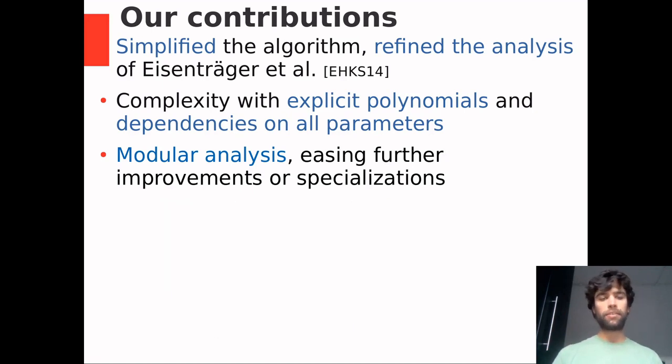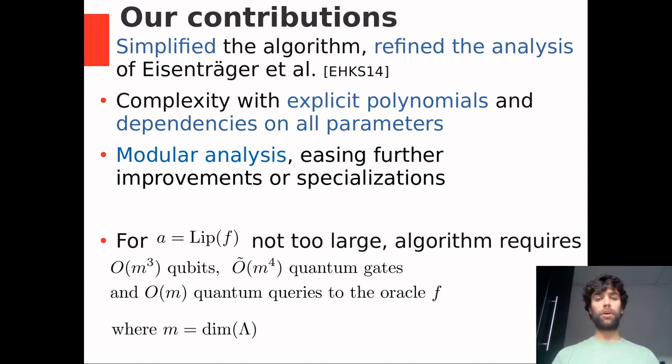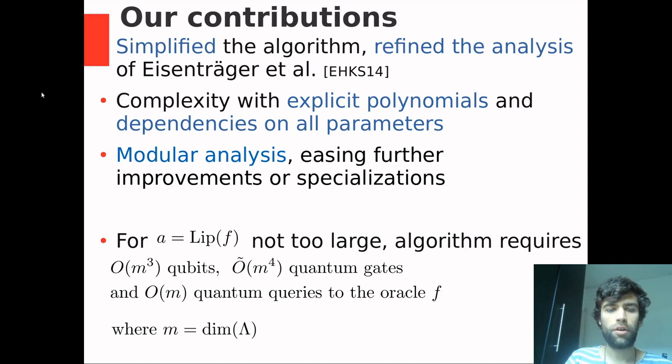Our result looks like this. But it can be summarised as follows. For an oracle function for which the Lipschitz constant is not too large, the algorithm requires a cubic amount of qubits, a quartic amount of quantum gates and a linear amount of quantum queries to the oracle. And here M is the dimension of your hidden lattice. I would like to stress that the periodic oracle function also needs to be not too constant. It needs to be strictly periodic. If the function is too constant, we are not able to extract useful information out of it.